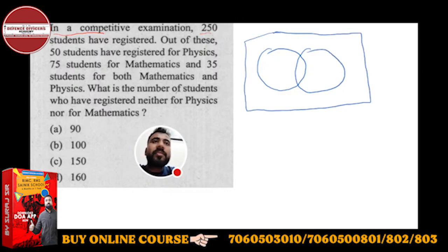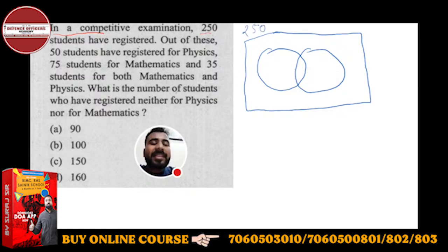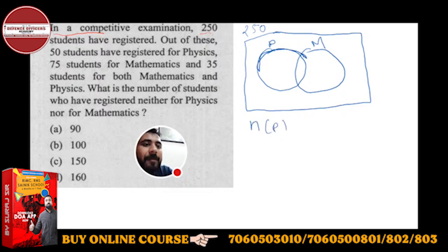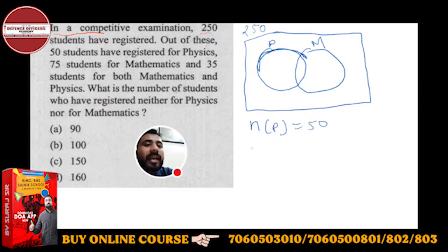This rectangle represents the universal set. What is given to you? 250 are the total students — I will write them outside. In this rectangular universal set, there are total 250 students. Out of these, 50 students have registered for Physics, and this is Maths. N of P is equal to 50, and N of M, mathematics, the number of students in mathematics, is 75.